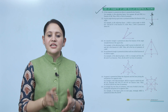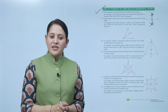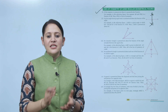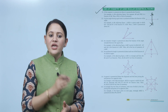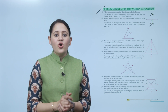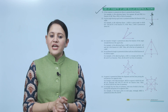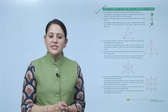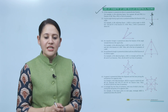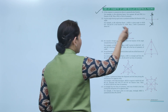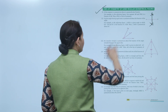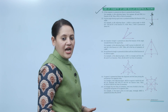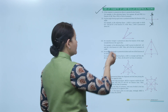A given angle having equal arms is symmetrical about the bisector of the angle. For example, in the adjoining figure, angle AOB is the given angle in which OA equals OB, and OC is the bisector of angle AOB. Then AOB is symmetrical about OC. The bisector divides the angle into two equal angles: angle BOC equals angle COA.